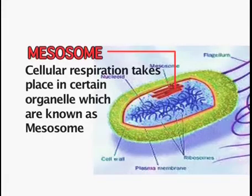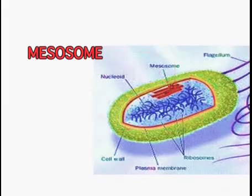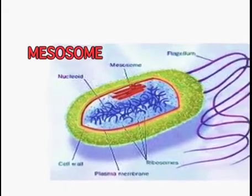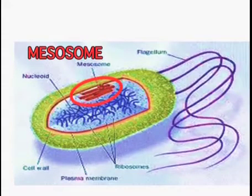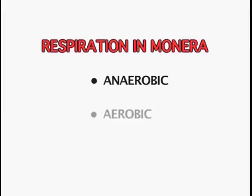If the mitochondria is absent, then how does cellular respiration take place in these prokaryotic organisms? Cellular respiration takes place in certain organelles known as mesosomes. You can see these mesosomes in the figure as internal extensions of the plasma membrane. So the cellular respiration takes place in these mesosomes in the absence of mitochondria. The respiration otherwise is both anaerobic as well as aerobic.